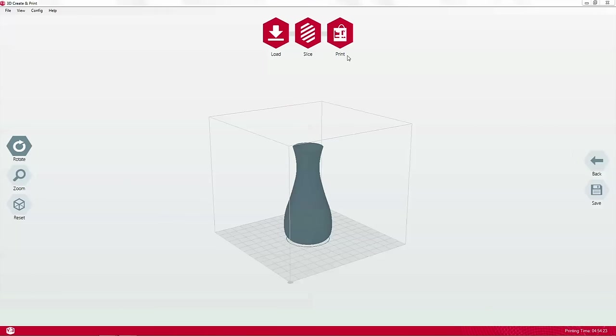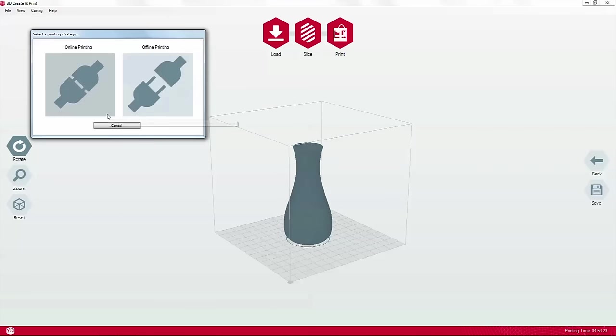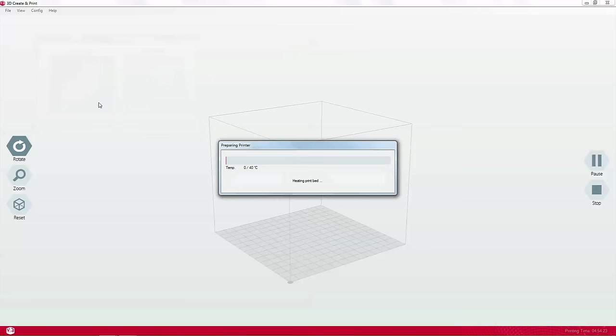Once your file is sliced, click print. The software now offers you the options of printing online or offline. If you choose the offline option, you can unplug your computer from the printer once the print command has fully spooled to the printer, which may take some time. Or if you're happy simply to leave the computer where it is during the print operation, select online. Printing will begin once the plate and nozzle have reached operating temperature. This shouldn't take long if you've just extruded filament as the printer should be nice and hot already.